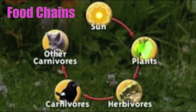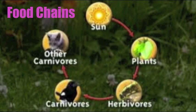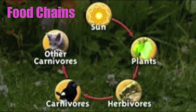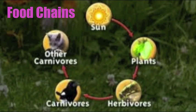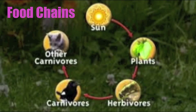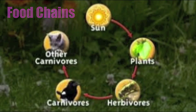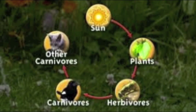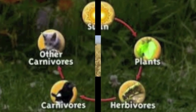Scientists classify the organisms found in food chains into three main groups: producers, consumers, and decomposers. Let's examine each group separately.